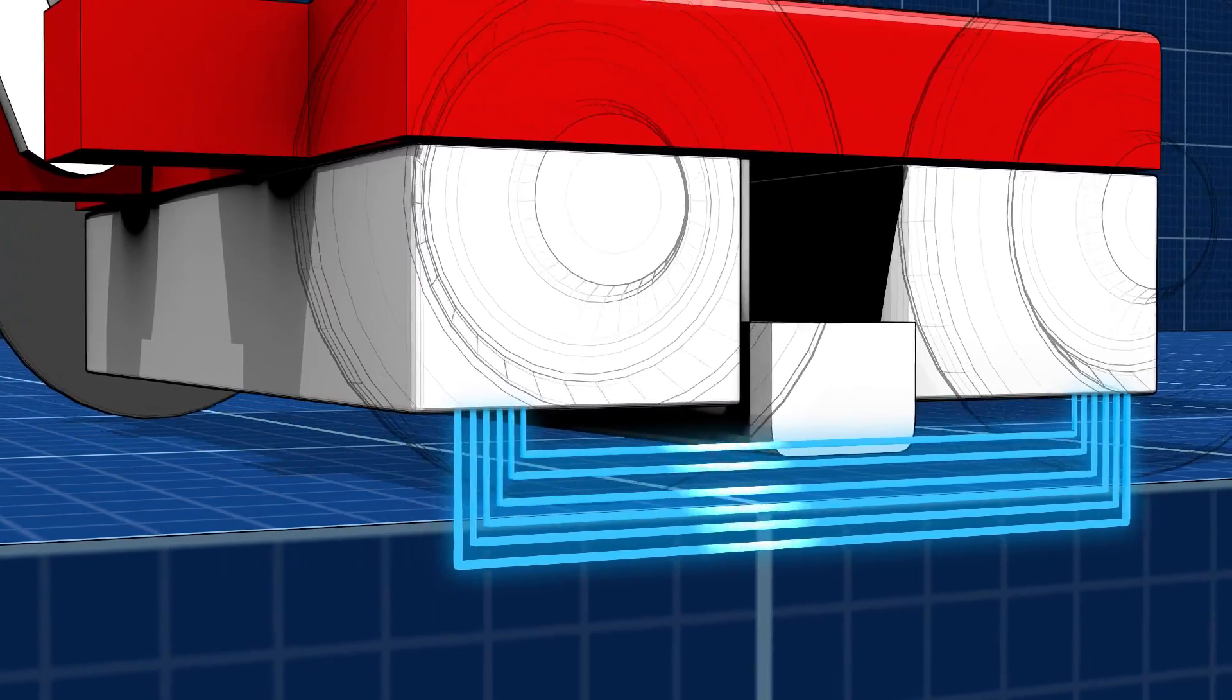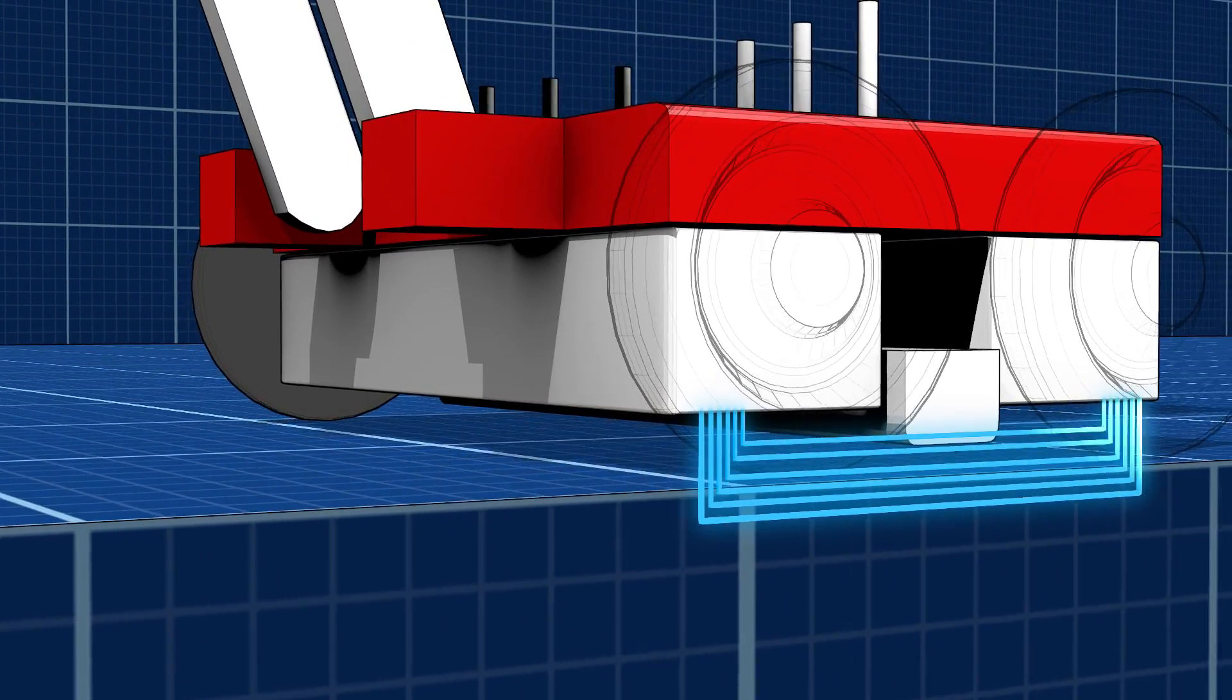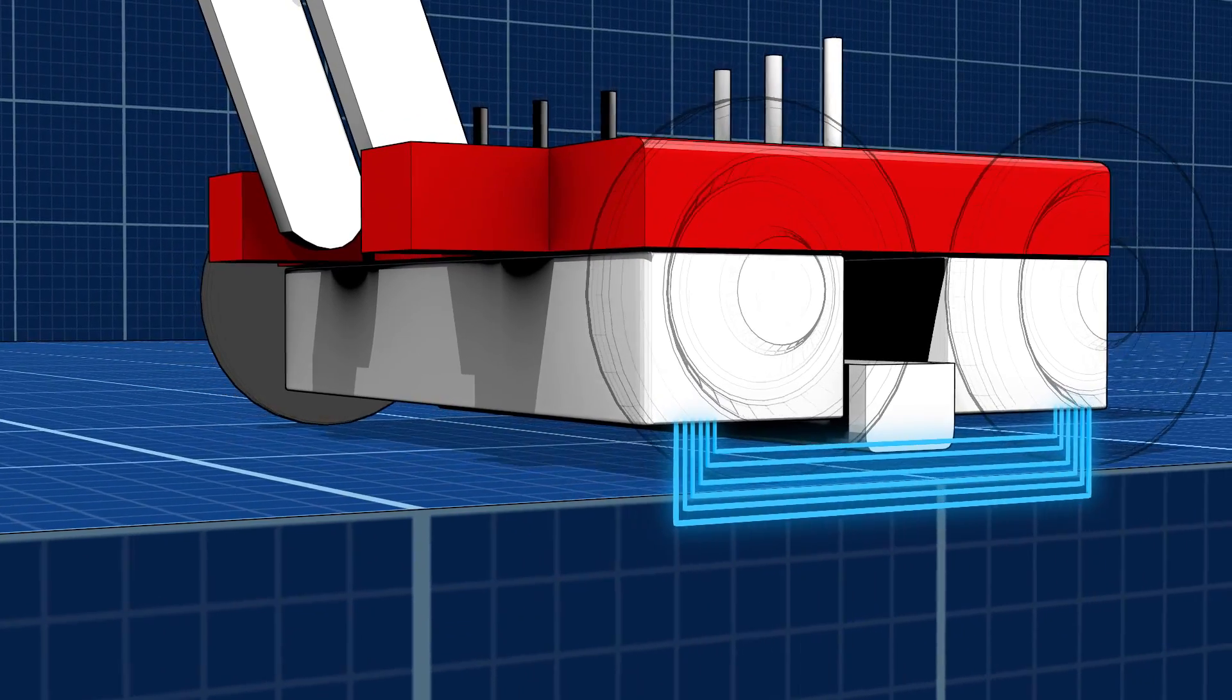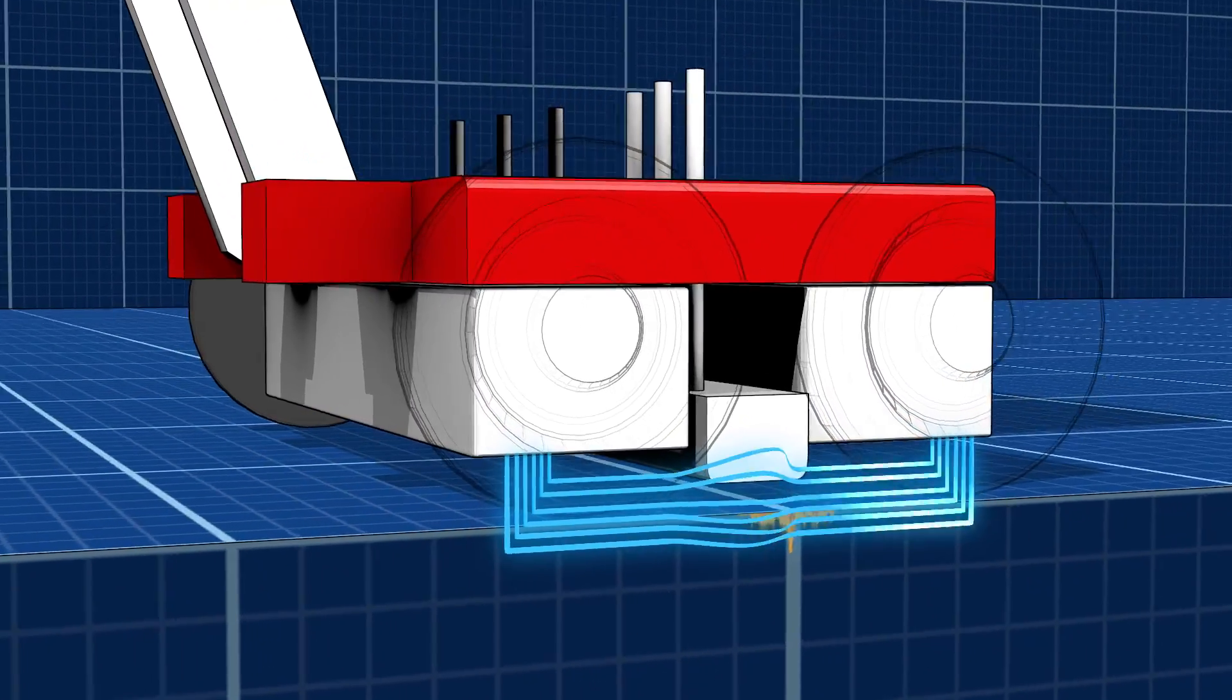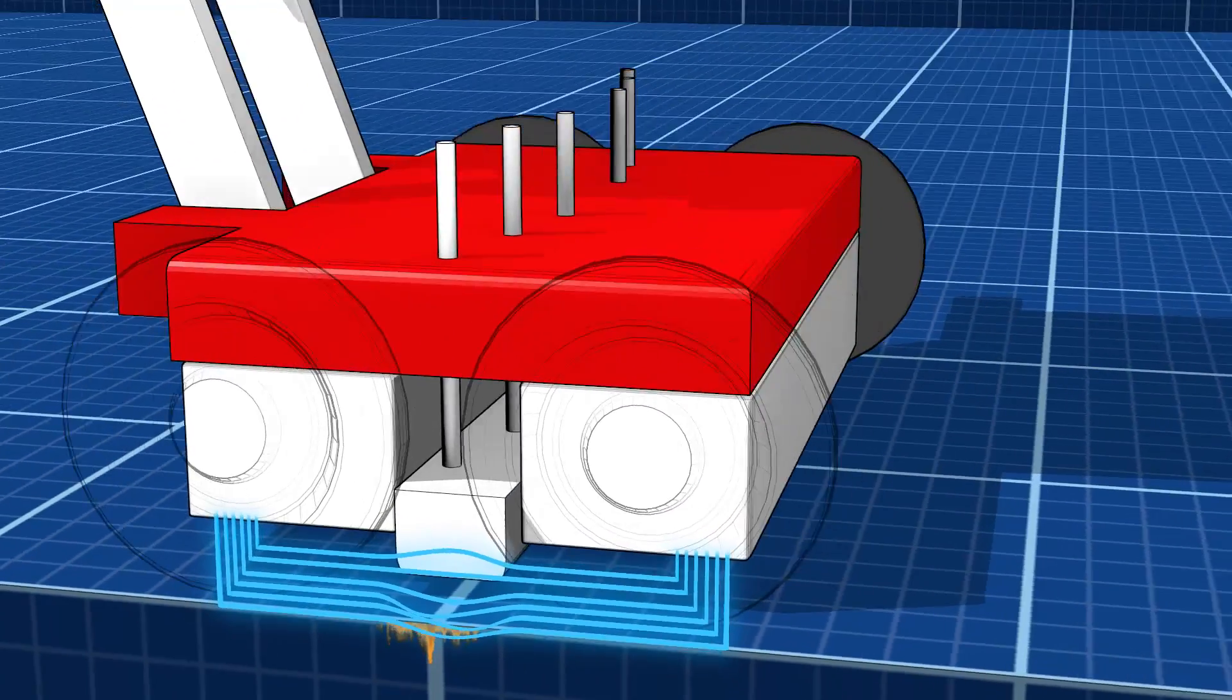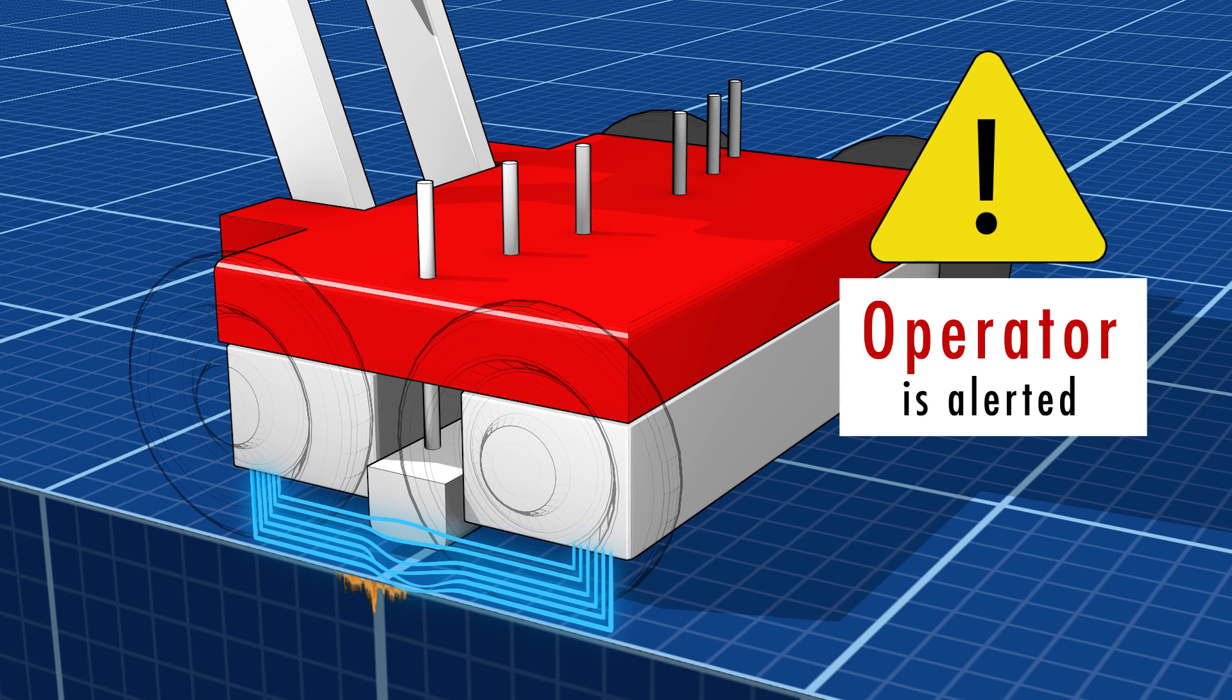The tool travels along the inspection area, detecting the magnetic flux leakage. If no flux leakage is detected, then the area is clear and the operator can move on to the next plate. However, if the sensors detect any flux leakage at the surface, the operator is alerted to the location of the problem area and its severity.